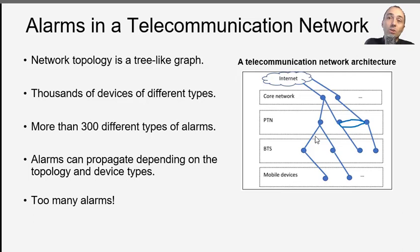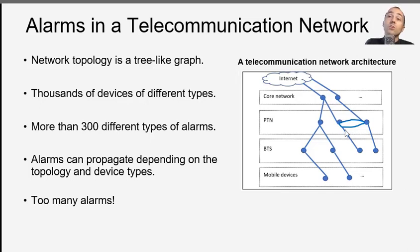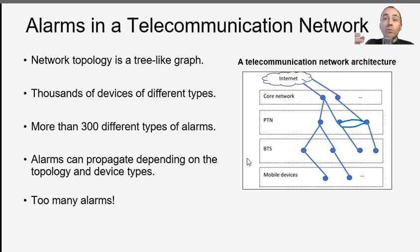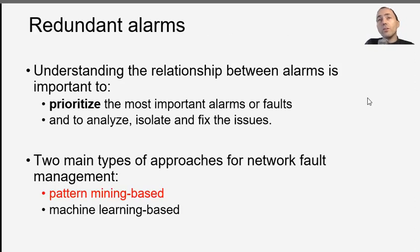Here I have the topology of some real-life telecommunication network — it is a simplification of course. The topology looks a little bit like a tree, but it is actually a graph because there can also be rings in the topology. There can be thousands of devices of different types and more than 300 different types of alarm, and some of these alarms can propagate on the network. We want to find the redundant alarms and understand the relationship between alarms to prioritize the most important faults to isolate or fix.